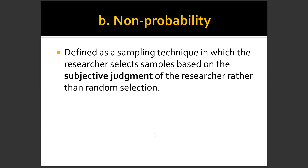The next type of sampling is non-probability sampling. It is defined as a sampling technique in which the researcher selects samples based on the subjective judgment of the researcher rather than random selection. Take note: subjective — so there is bias. While in probability sampling everyone has an equal chance to be selected, in non-probability sampling selections are based on the researcher's decision, introducing a subjective approach or judgment.